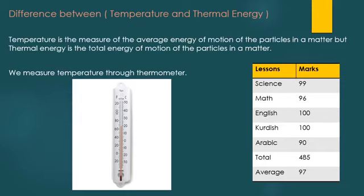So as you can see, I have the average here which is 97. I summed 99, 96, 100, the other 100, and then 90, divided by 5 and got 97. But for the thermal energy, I just summed science, math, English, Kurdish, and Arabic and left the total at 485. We also talked about how we can measure temperature — you guys remember, we talked about the thermometer. Even in class, I brought the thermometer with cold and hot water. I was having my container of really hot water, put it inside the flask, and the thermometer did its work.